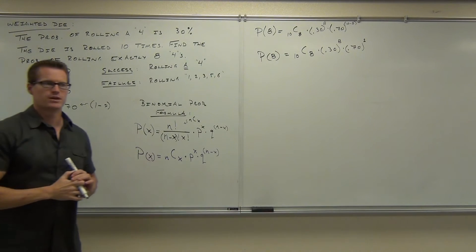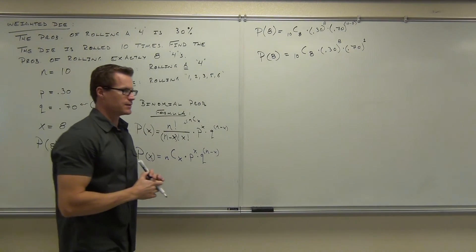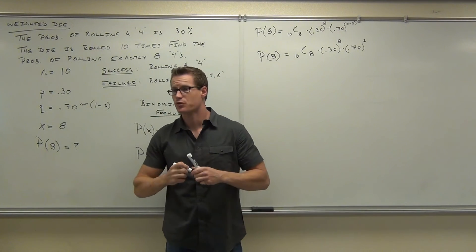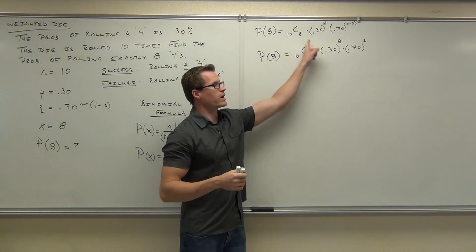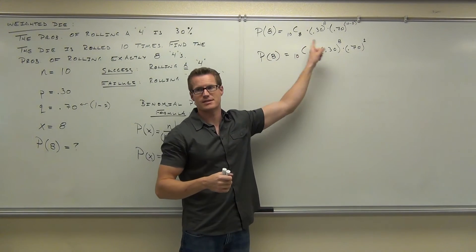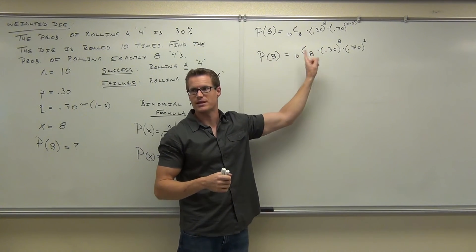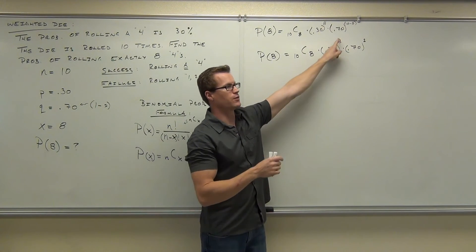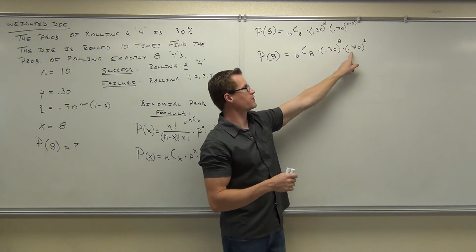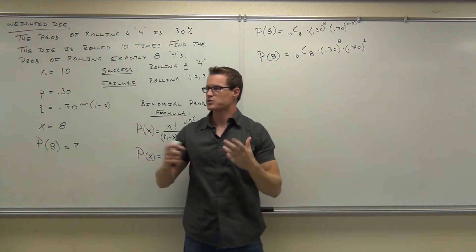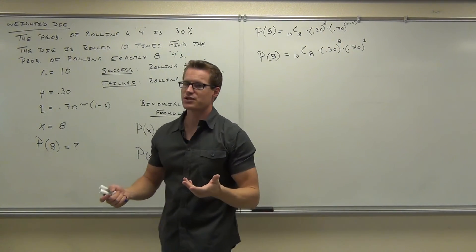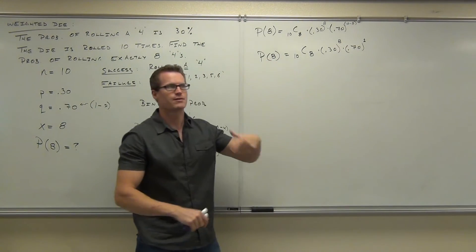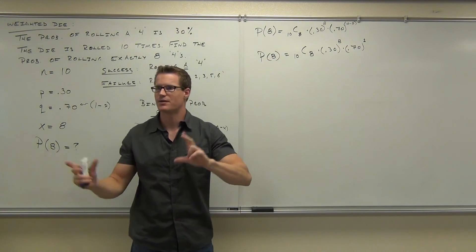Our probability is 10C8 times 0.30 to the eighth power times 0.70 to the second power. That will give us the probability of getting exactly eight successes. This is every possible way you could get eight successes out of ten rolls. This is the probability of success — we want eight of them. This is the probability of failure — we want two of them. Multiply all those probabilities together — multiplication rule — and you have this formula.